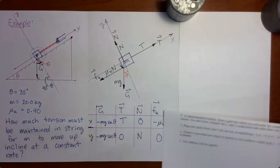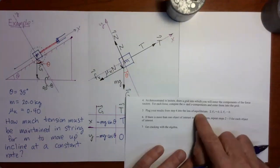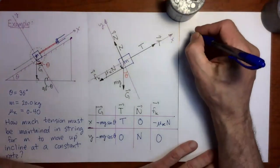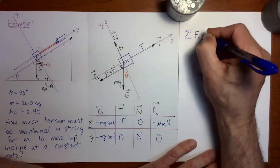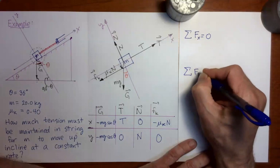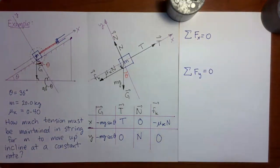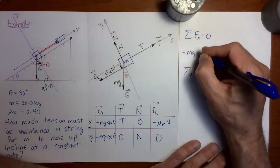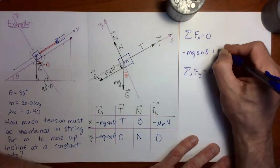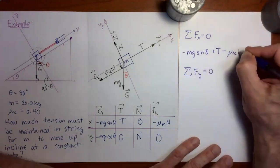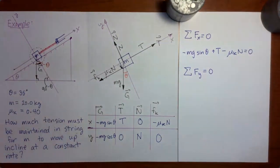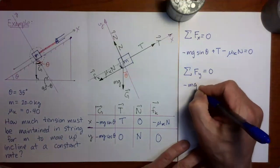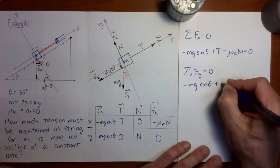Let's wrap things up. We go to the step on the handout which says: plug the results from our grid into the first condition of equilibrium — the x components of the forces sum to zero, and the y components of the forces sum to zero. Summing the x components gives: −mg sin θ + T − μₖN = 0. Summing the y components gives: −mg cos θ + N = 0.